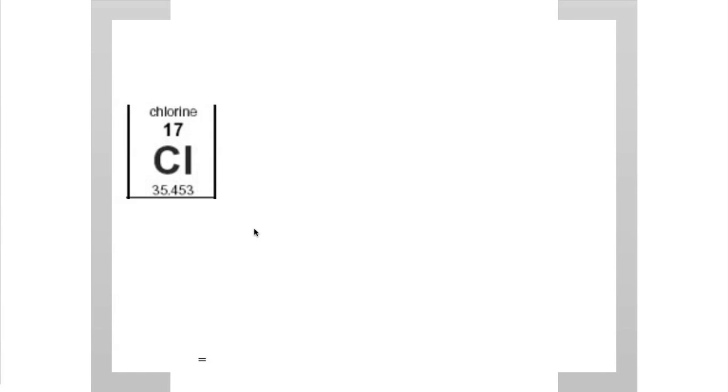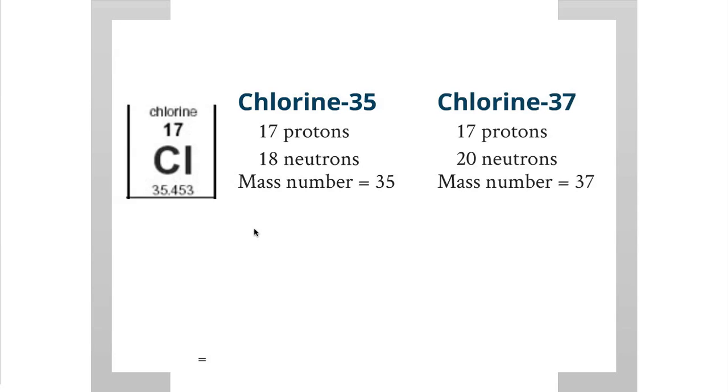Again using chlorine as an example, chlorine-35 has 17 protons, 18 neutrons with a mass number of 35. Chlorine-37 has 17 protons and 20 neutrons with a mass number of 37. But that number right there on the periodic table beneath the chlorine symbol, that's neither 35 nor 37. So why is that? Why is that a decimal?